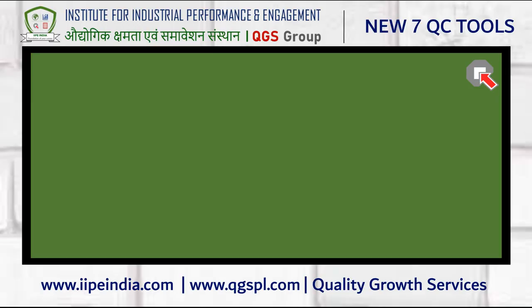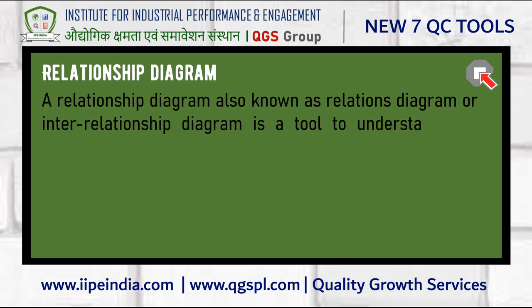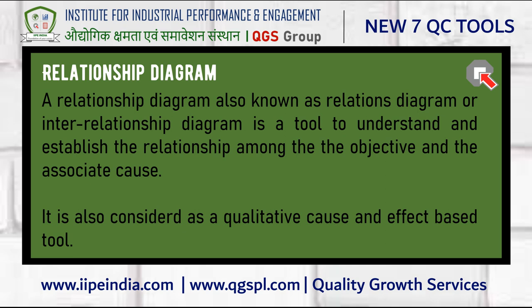In this video of new 7QC tools, I shall discuss the relationship diagram. A relationship diagram, also known as a relations diagram or interrelationship diagram, is a tool to understand and establish the relationship among the objective and the associated causes. Though many consider it as a cause-and-effect tool, which is partially correct, there is more to it.